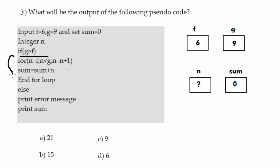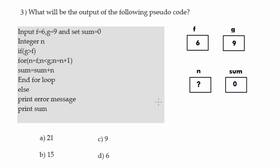If the condition is true the for loop will be executed; if false, the else block runs displaying an error message. Since f is 6 and g is 9, and 9 is greater than 6, the condition is true. In the for loop, the initialization is n equals f, so n becomes 6. The condition is n less than g — 6 less than 9 is true — so we enter the loop and execute sum equals sum plus n: 0 plus 6 gives sum equals 6.